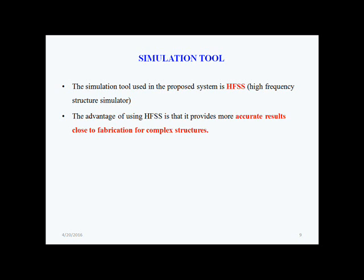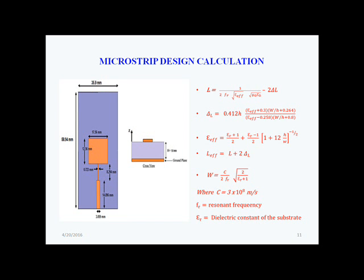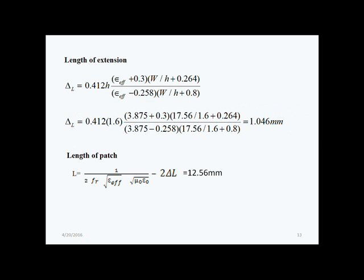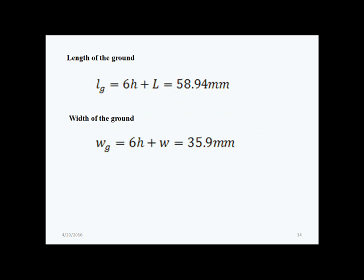The simulation tool is HFSS (High Frequency Structure Simulator). The advantage is that accurate results close to fabrication for complex structures can be obtained. The microstrip design calculations and formulas used to design the antenna characteristics are given. The length of the ground lg = 6h + L = 58.94mm and width of the ground wg = 6h + w = 35.9mm.